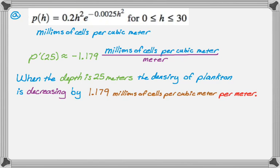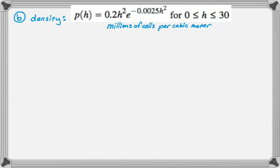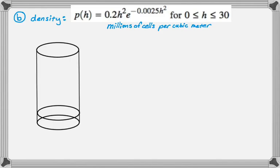So let's move on to part B. In part B, we still know the density, and we are asked to consider a vertical column of water with horizontal cross-sections of constant area, three square meters. To the nearest million, how many plankton cells are in the column between zero and 30? I'm going to draw a little picture of this. That's my column. It's going to go from zero to 30. Those are H values.